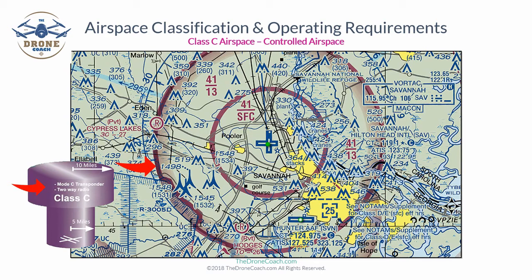The runway icons indicate the shortest runway is greater than 8,069 feet. The first outer shelf extends 10 miles from the center of the airport, with the lower shelf starting at 1,300 feet MSL and extending up to 4,100 feet MSL. This Class C airspace is sitting on top of a shaded magenta circle, which is Class E airspace — without that Class E below, you would just see solid magenta.